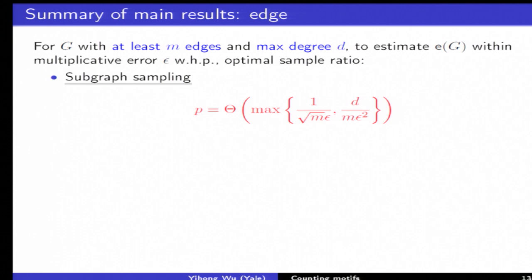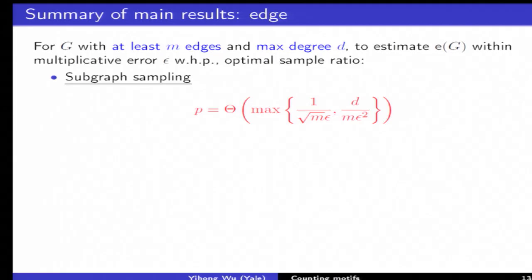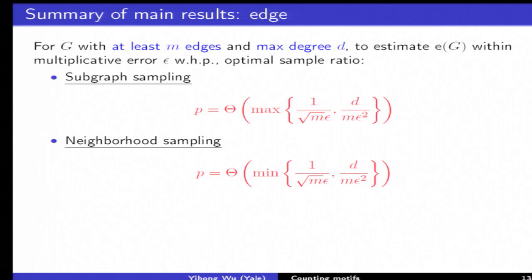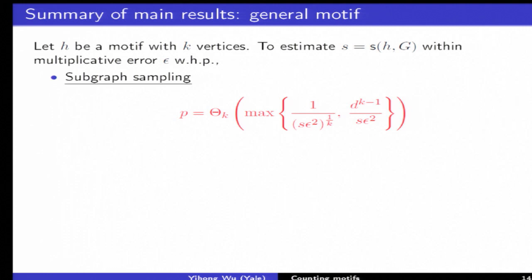I'll give you a quick summary of the main results. Let's say you want to count edges based on sampled version and you have a graph with at least M edges and maximum degree D. The optimal sample complexity is a function of number of edges, absolute accuracy, and also the degree. This is given by this formula if you only do subgraph sampling, and if you do neighborhood sampling which is more informative the maximum becomes a min. These can be easily achieved and these are optimal in the worst case. You can construct graphs which you cannot beat these results.